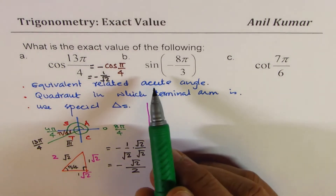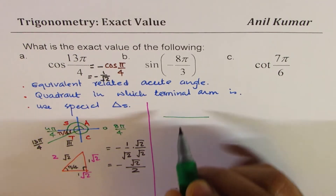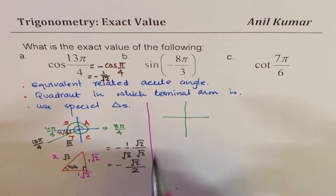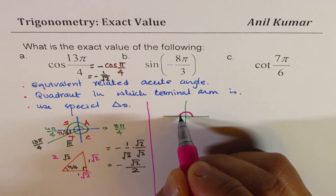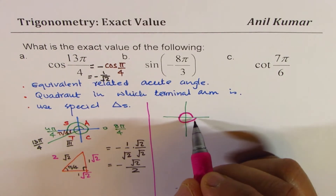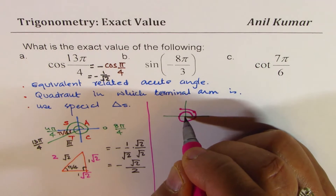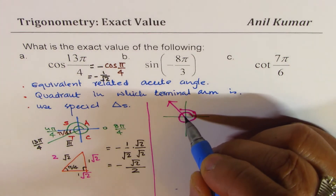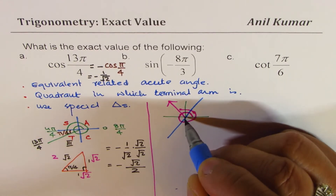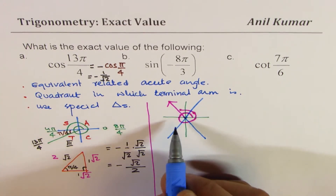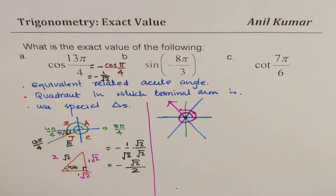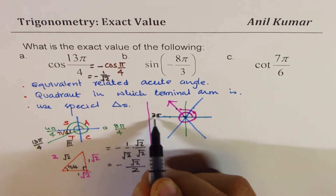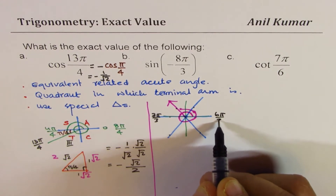Now the second example: sin(-8π/3). For this, we divide the circle into thirds. Counting the thirds around the circle: 1π/3, 2π/3, 3π/3, 4π/3, 5π/3, 6π/3, 7π/3, and 8π/3.